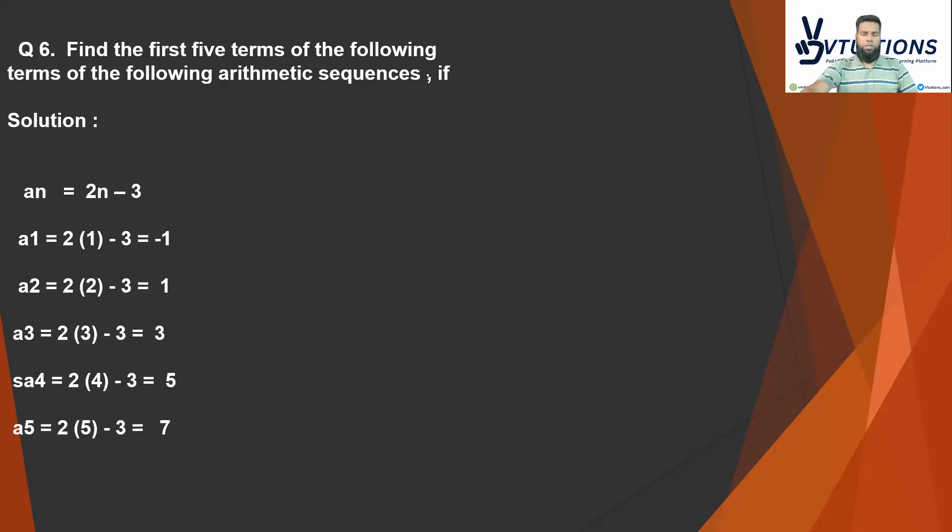Find the following terms of the following arithmetic sequences. Solution: an = 2n - 3. a1 = 2(1) - 3 = -1. a2 = 2(2) - 3 = 1. a3 = 2(3) - 3 = 3. Very simple, look.